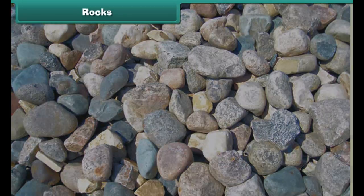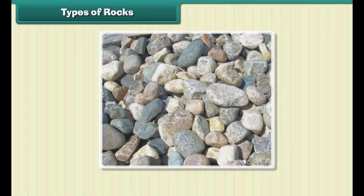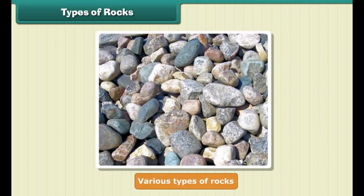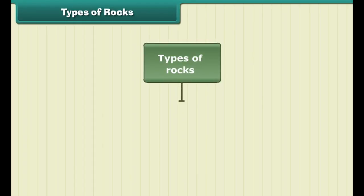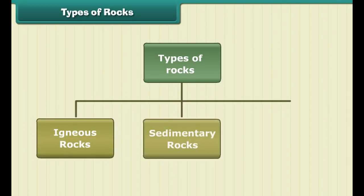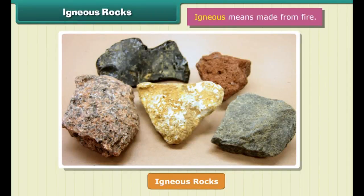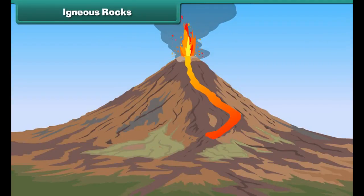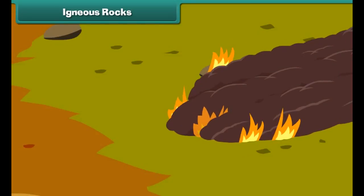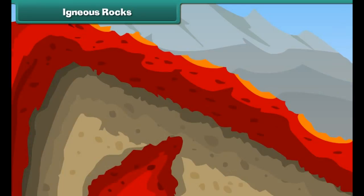Rocks can be of different size and color. The process that breaks rocks down into smaller pieces is called weathering. We now know that the earth's crust is made up of various types of rocks. The three major types are igneous rocks, sedimentary rocks, and metamorphic rocks. Let's study about them in detail.